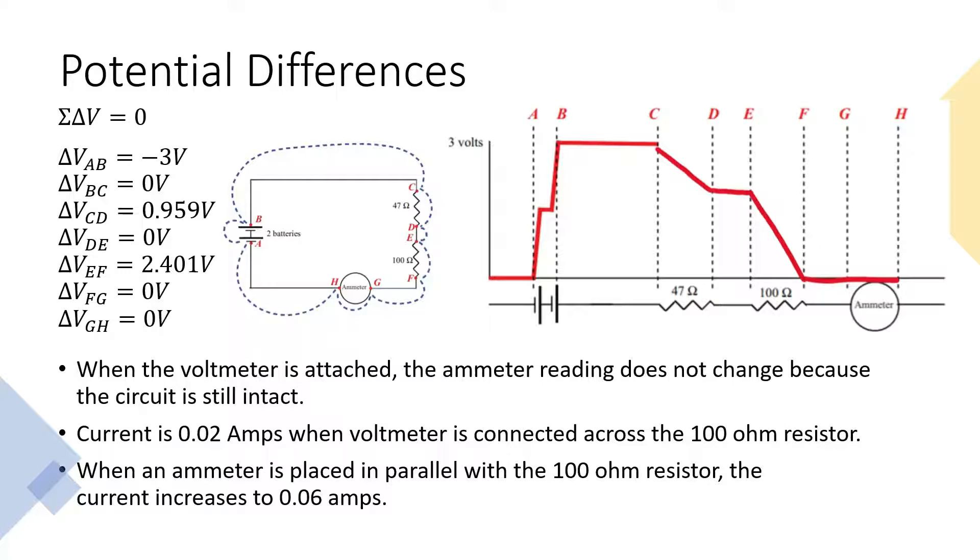When the voltmeter is attached, the ammeter reading does not change because the circuit is still closed. The voltmeter is being added onto a fully connected circuit. In the previous scenario, the voltmeter replaced a wire or other conductive material that prevented the current from passing through the circuit. This time, the voltmeter provides no interference to the circuit, therefore leaving the ammeter reading unaffected.